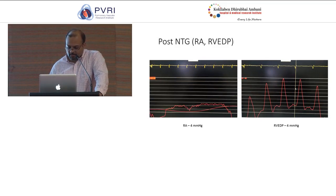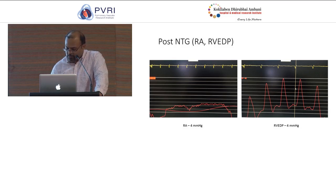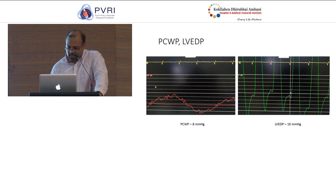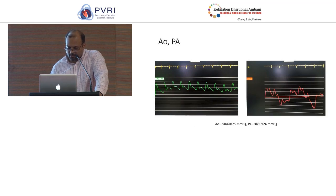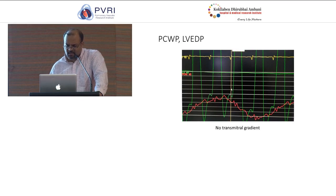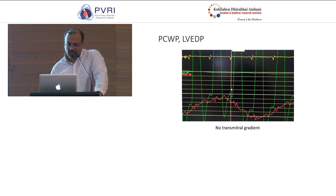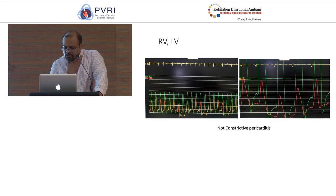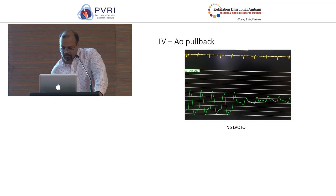After that, we gave NTG (nitroglycerine). His RA mean pressure and RV end-diastolic pressure came down to 4 mmHg, pulmonary capillary wedge pressure came to 8 mmHg (normal), and LV end-diastolic pressure came down to around 10 mmHg. His PA pressure was 28/17, mean of 24, which was in the normal range. A simultaneous tracing of pulmonary capillary wedge pressure and LV end-diastolic pressure showed no significant transmitral gradient.